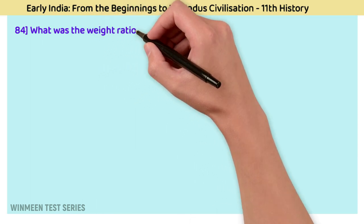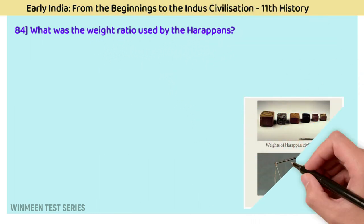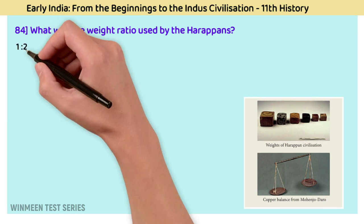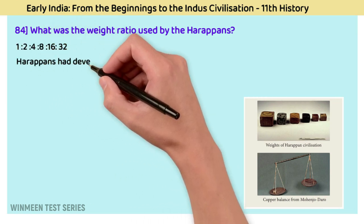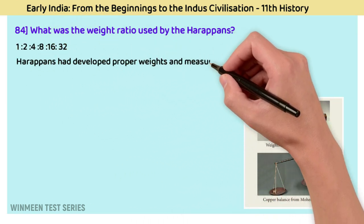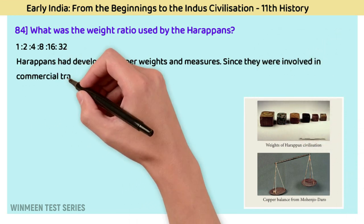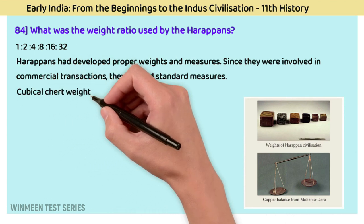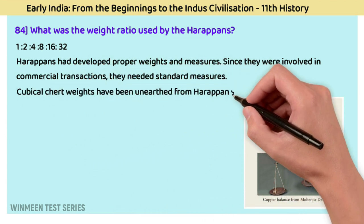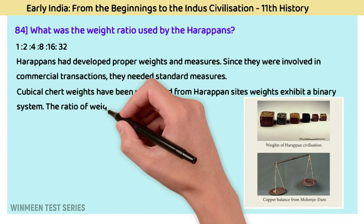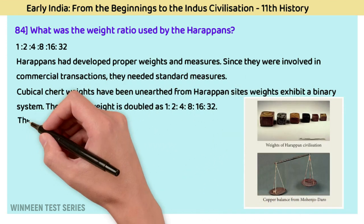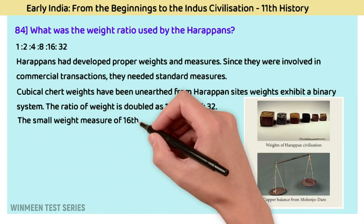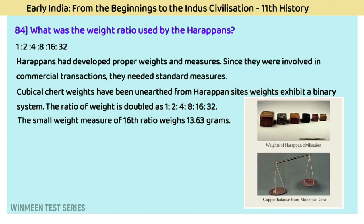Question 84: What was the weight ratio used by Harappans? The answer is 1:2:4:8:16:32. Harappans developed proper weights and measures. Since they were involved in commercial transactions, they needed standard measures. Cubical chert weights have been unearthed from Harappan sites. Weights exhibit a binary system with the ratio 1:2:4:8:16:32, and the smallest weight of the 16th ratio is 13.63 grams.